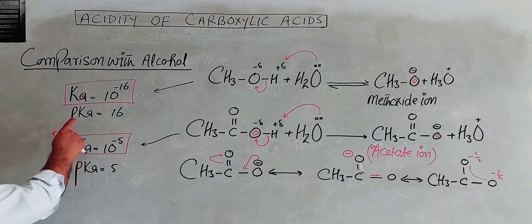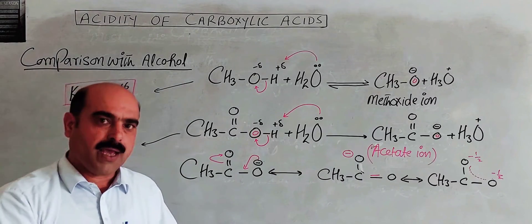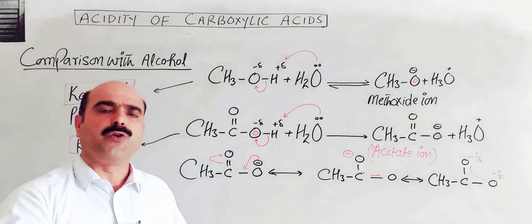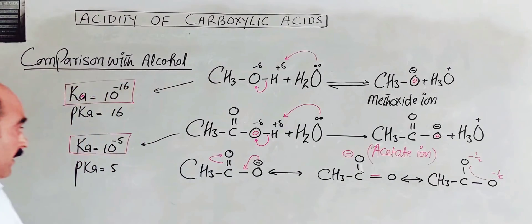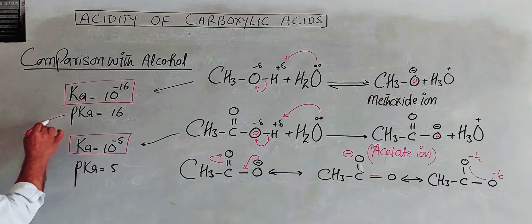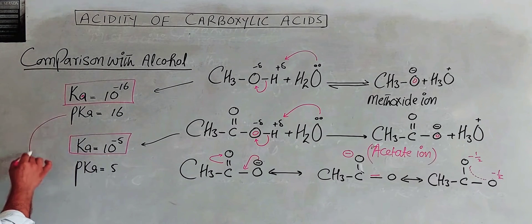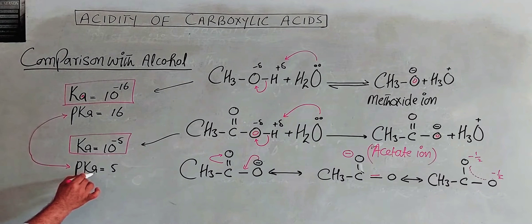pKa and acidity have an inverse relationship. The higher the pKa value, the weaker the acid. So methyl alcohol with a pKa of 16 is a much weaker acid than acetic acid with a pKa of 5.